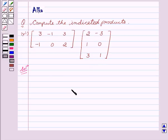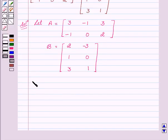Now let's start with the solution. Let us name our first matrix be A and our second matrix be B. Now we have to find AB.